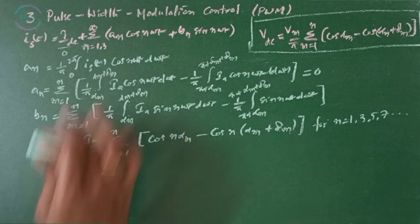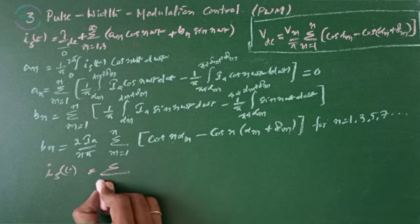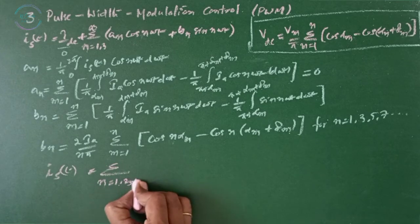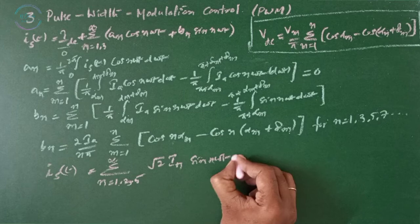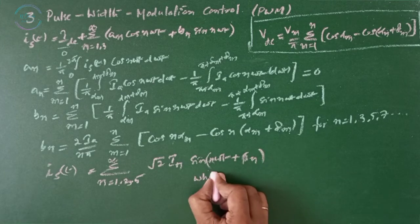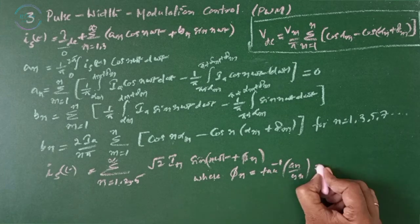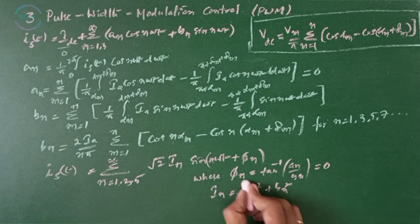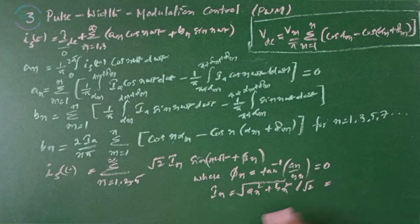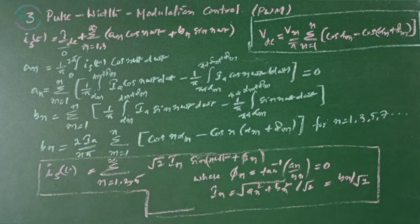Now substituting these values in this equation, you are going to get Is of t equals to sigma n equals to 1, 3, 5 up to infinity 2 Ia by n sin n omega t plus phi n where phi n equals to tan inverse of An by Bn is equals to 0 and An equals to An square plus Bn square divided by root 2 that equals to An is 0 so Bn by root 2. This is the instantaneous input current. This is the average output voltage.